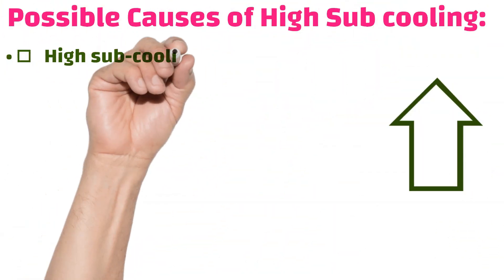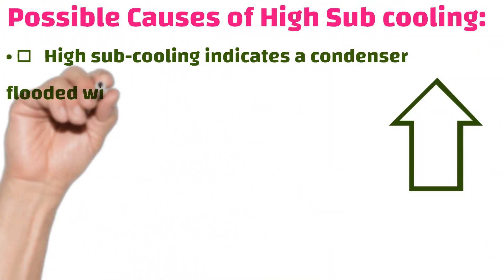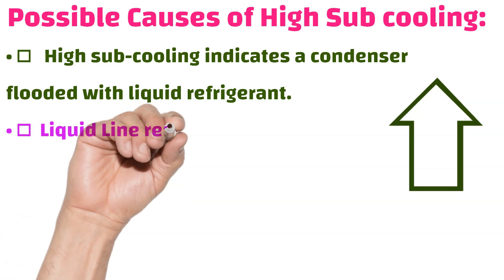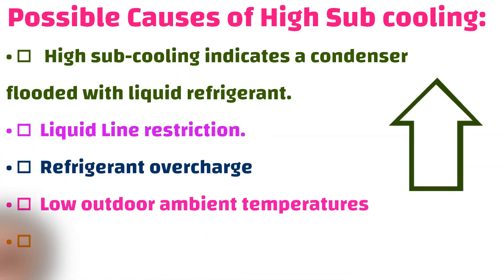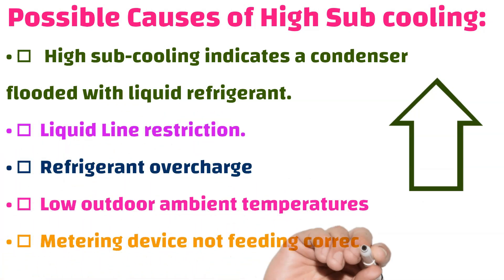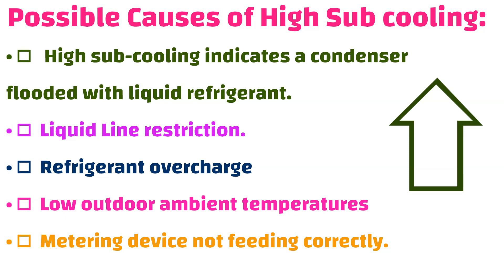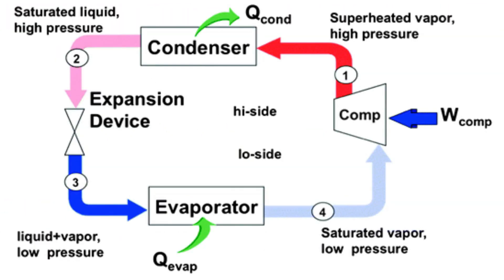Possible causes of high sub-cooling: one, high sub-cooling indicates a condenser flooded with liquid refrigerant; two, liquid line restriction; three, refrigerant overcharge; four, low outdoor ambient temperatures; five, metering device not feeding correctly.